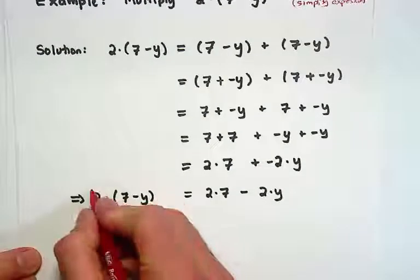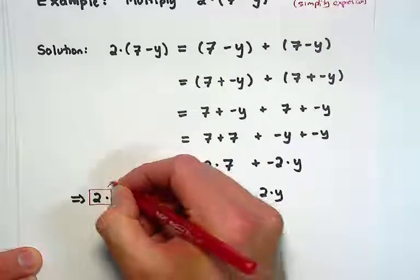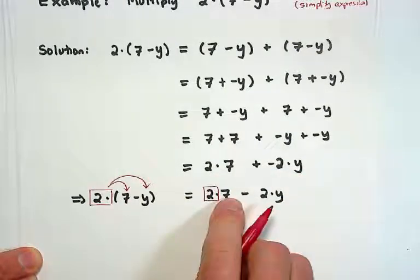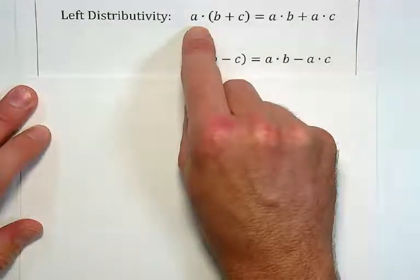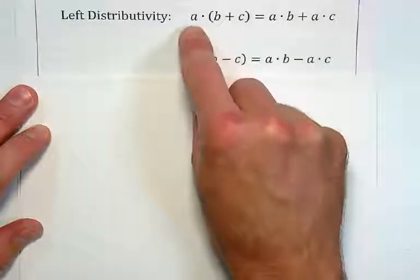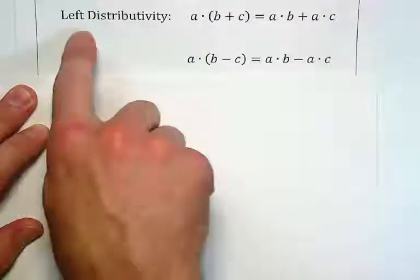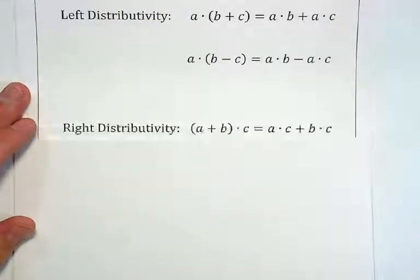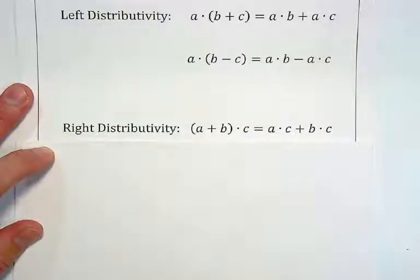Just like we did in addition, we can actually distribute that multiplication through the subtraction. We're passing that multiplication through — one term shows up on the 7 and another term shows up on the y. That's called distributivity. When we multiply an addition or a subtraction on the left-hand side, we can pass that multiplication through the operation. That's called left distributivity because the multiplication shows on the left.